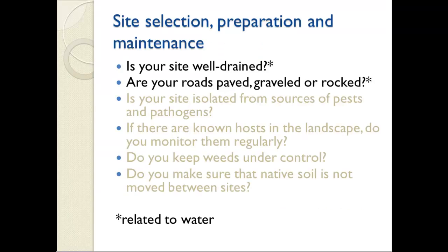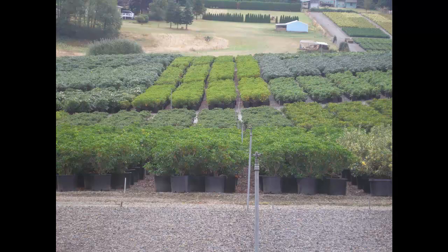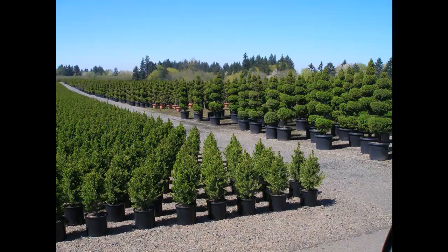Let's start with site selection. There are several considerations, but today I'm just going to address those that deal with water. Is your site well-drained, and are your roads paved, graveled, or rocked? Here's a nursery with good slope to facilitate drainage and a nice layer of rock. This container area also has a good slope. Even though the road is not paved, it does have rock, and notice it is also very clean with no plant debris on the ground.